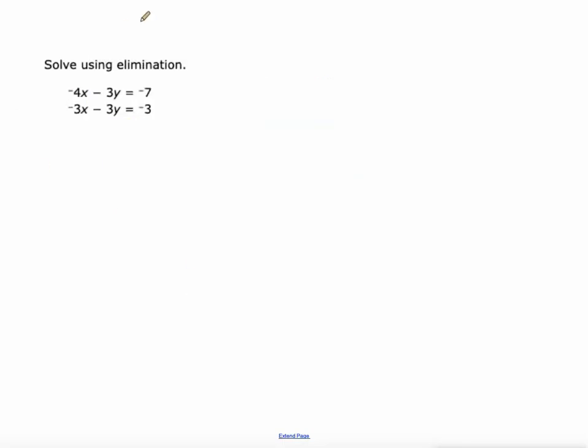Let's get to another one here. We can't just combine them together because nothing would cancel out. I am looking at the y values though and they're both negative 3y, so if we take this top equation and multiply everything in it by negative 1, we get positive 3y. Then we'll add the equations together and the y terms cancel out. 4x plus negative 3x is just x and 7 plus negative 3 is 4, so x equals 4.